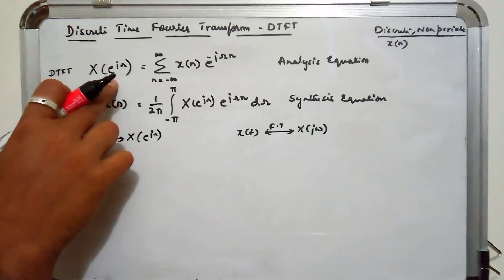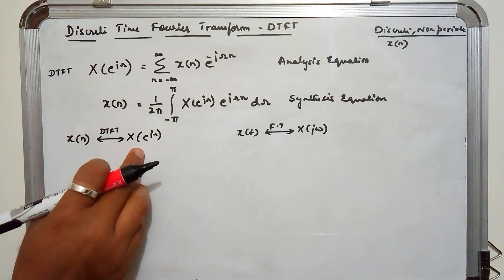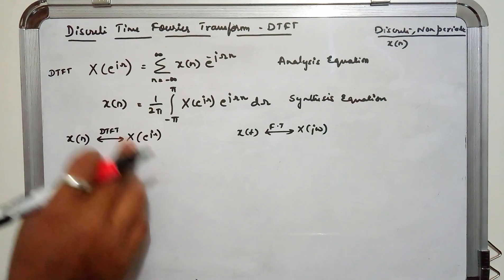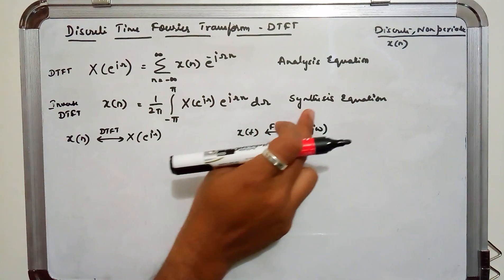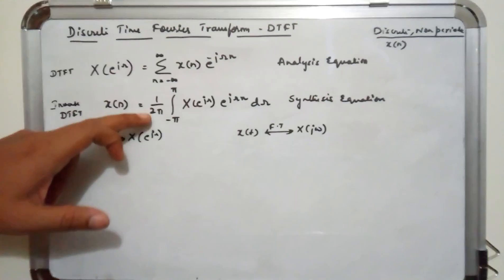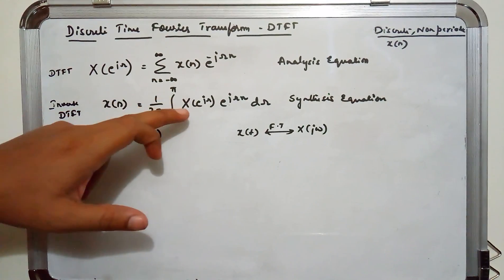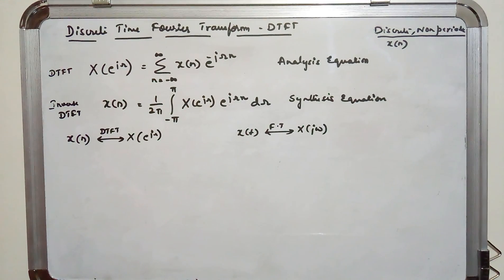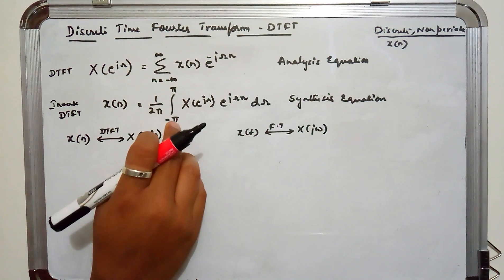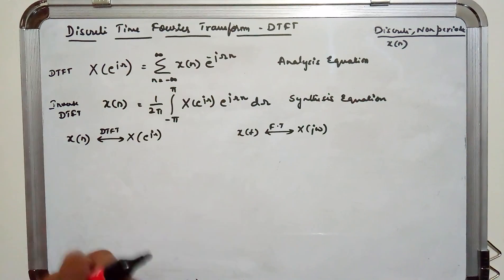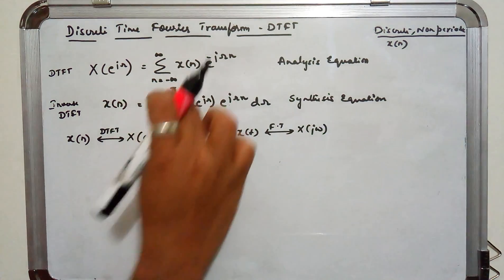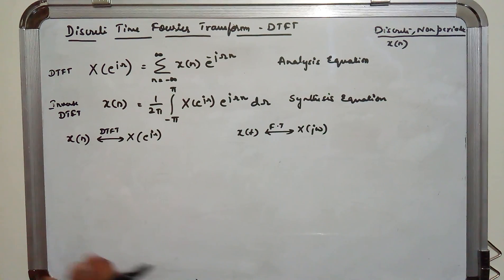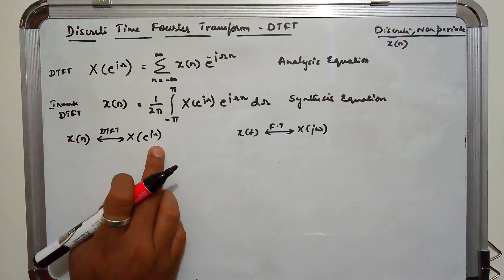Once we have obtained X(e^jω), how do we get X[n] back? That is the inverse DTFT formula, also called the synthesis equation. X[n] equals (1/2π) times the integral from −π to π of X(e^jω) · e^(jωn) dω. From this, we can see that X(e^jω) is periodic over the range −π to π, meaning X(e^jω) is periodic with period 2π.